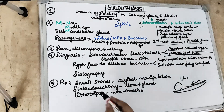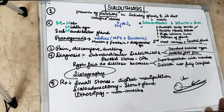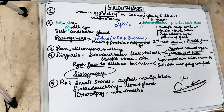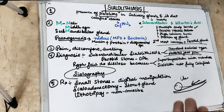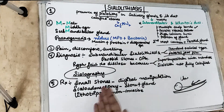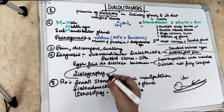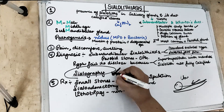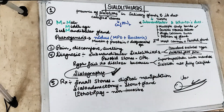For cases where radiographs are inconclusive, we perform sialography. In sialography, we do a retrograde injection of a radiopaque dye within the duct system and then take a radiograph. It is the best method for detecting salivary stones both within the gland and within the duct.